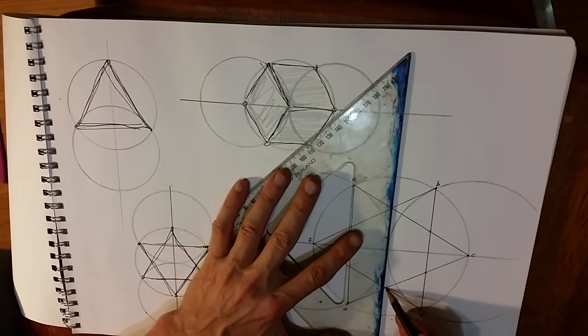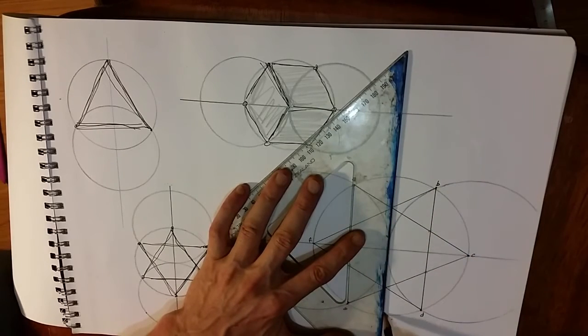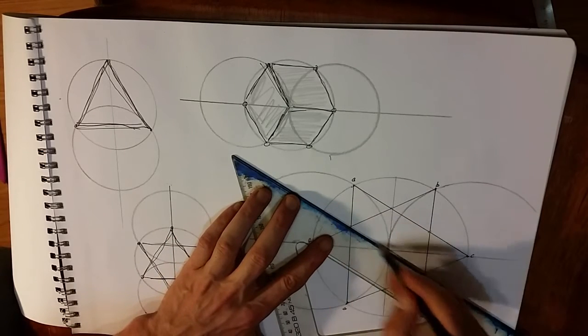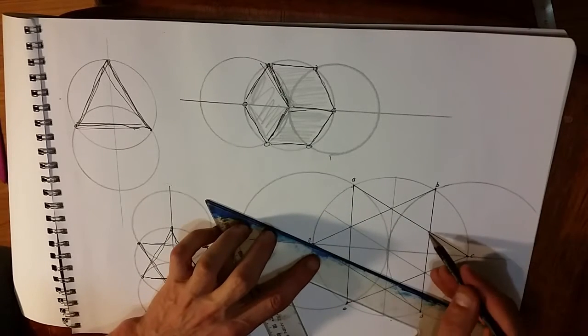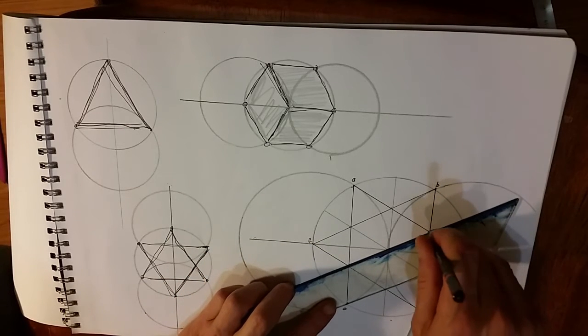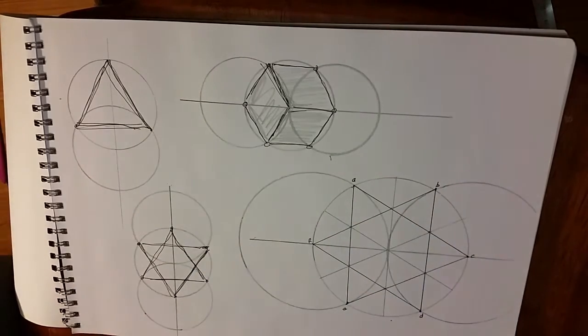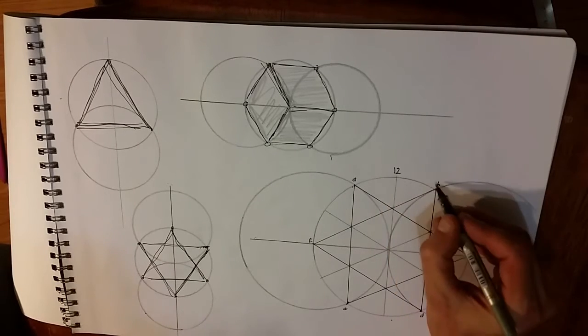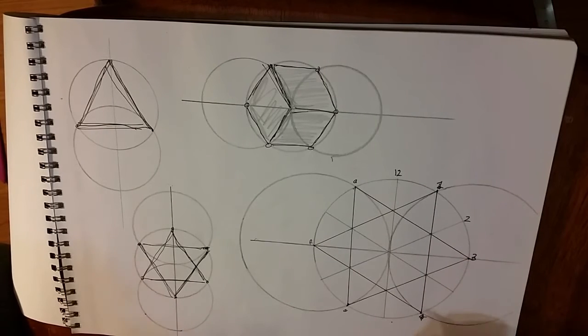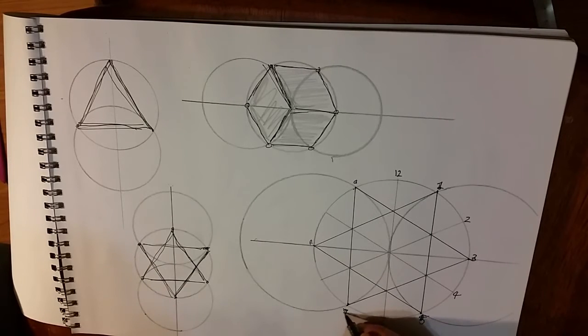We can use those to bisect the others. So we now have a nice little vesica. One, two, three, four, five, six, seven.